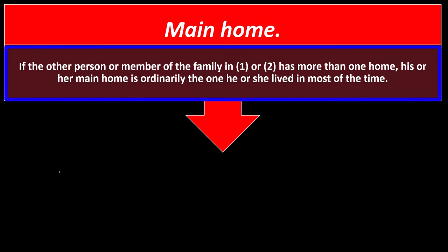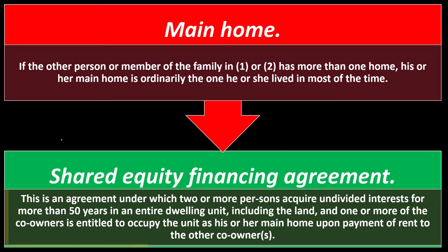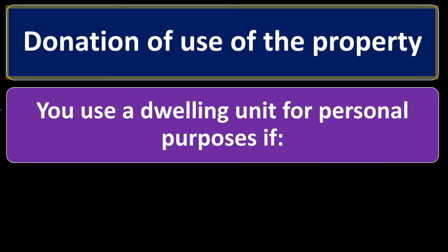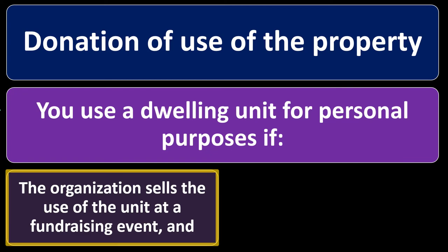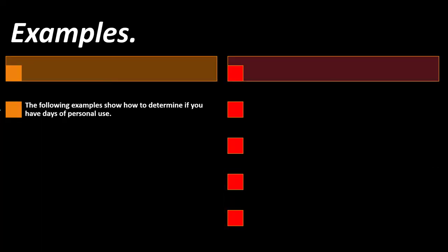If the person in categories one or two has more than one home, their main home is ordinarily the one they lived in most of the time. A shared equity financing arrangement is an agreement under which two or more persons acquire undivided interests for more than 50 years in an entire dwelling unit including the land, and one or more co-owners is entitled to occupy the unit as their main home upon payment of rent to the other co-owners. Regarding donation of use of property: you use a dwelling unit for personal purposes if an organization sells the use of the unit at a fundraising event and the purchaser uses the unit.